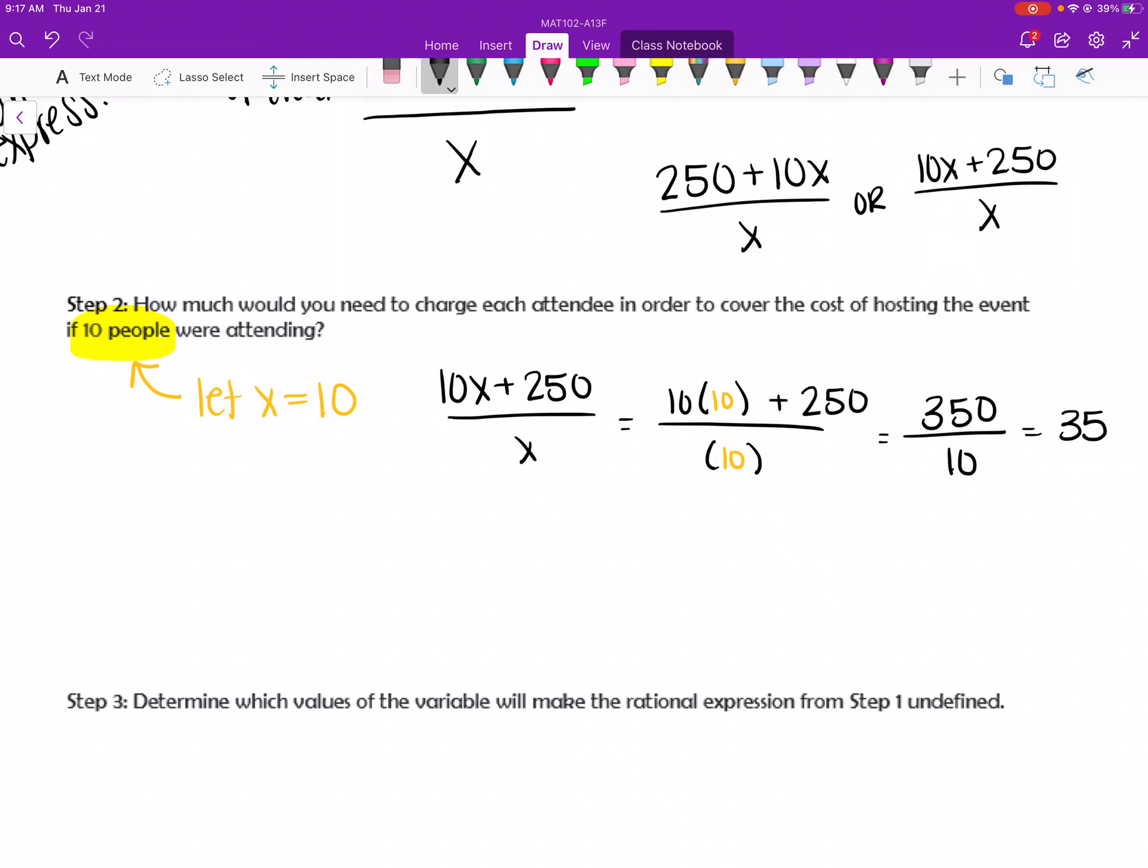So that means that if 10 people come, I need to charge each person $35. And then I will cover the complete cost of the event.